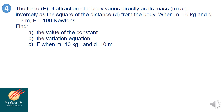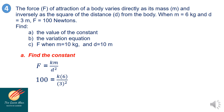Let's apply combined variation in a word problem. The force F of attraction of a body varies directly as its mass M and inversely as the square of the distance D from the body. When M is equal to 6 kilograms and D is equal to 3 meters, F is equal to 100 newtons. Find the constant, the variation equation, and F when M is equal to 10 kilograms and D is equal to 10 meters. The equation is F is equal to K times M all over D squared. Substituting: 3 squared equals 9, so multiplying both sides by 9 gives 9 times 100 equals 900, which equals 6K. Dividing by 6, K is equal to 150.